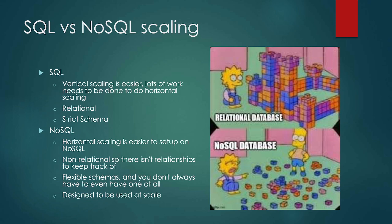SQL is a relational database made up of tables that have relationships to each other. SQL in general has a really strict schema. There's a very specific way the data is laid out and organized — the data is laid out like a pretty little castle, and we have to interact with that data in a specific way.